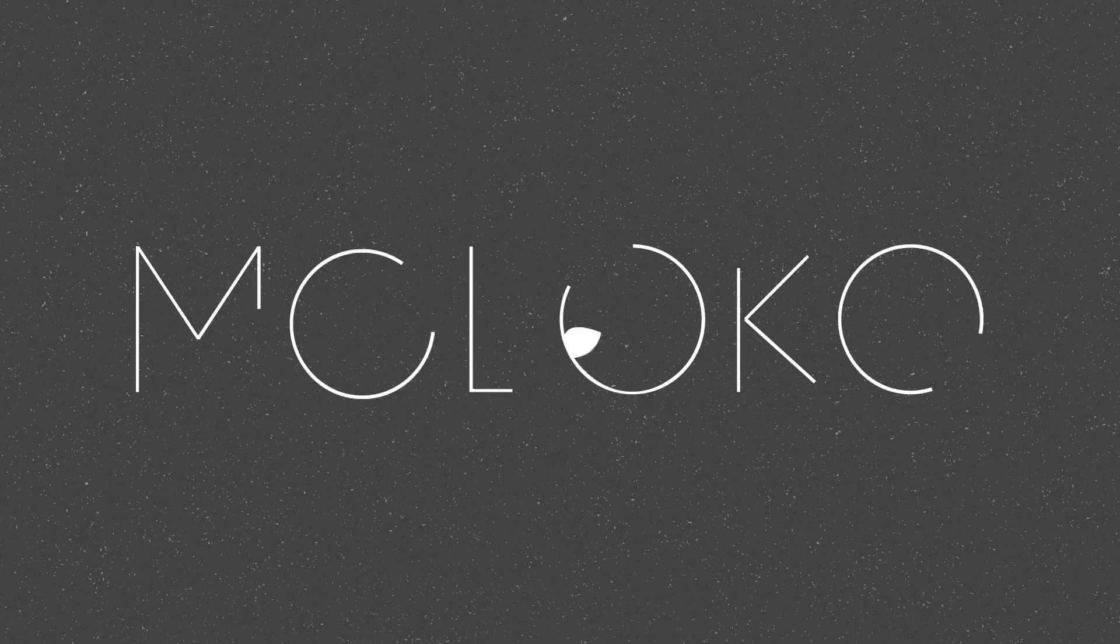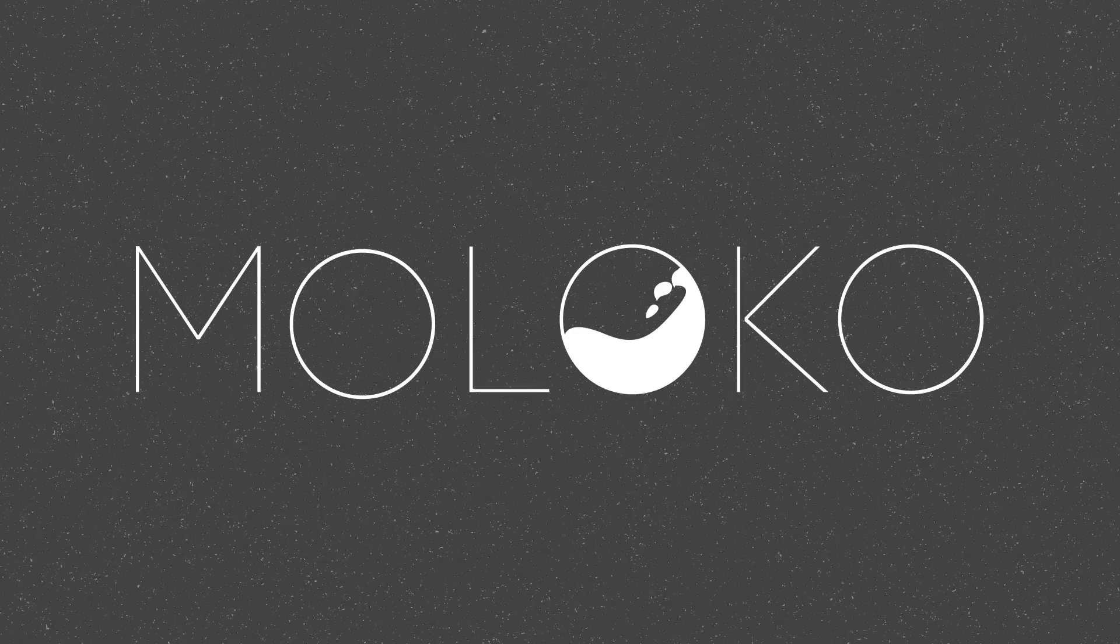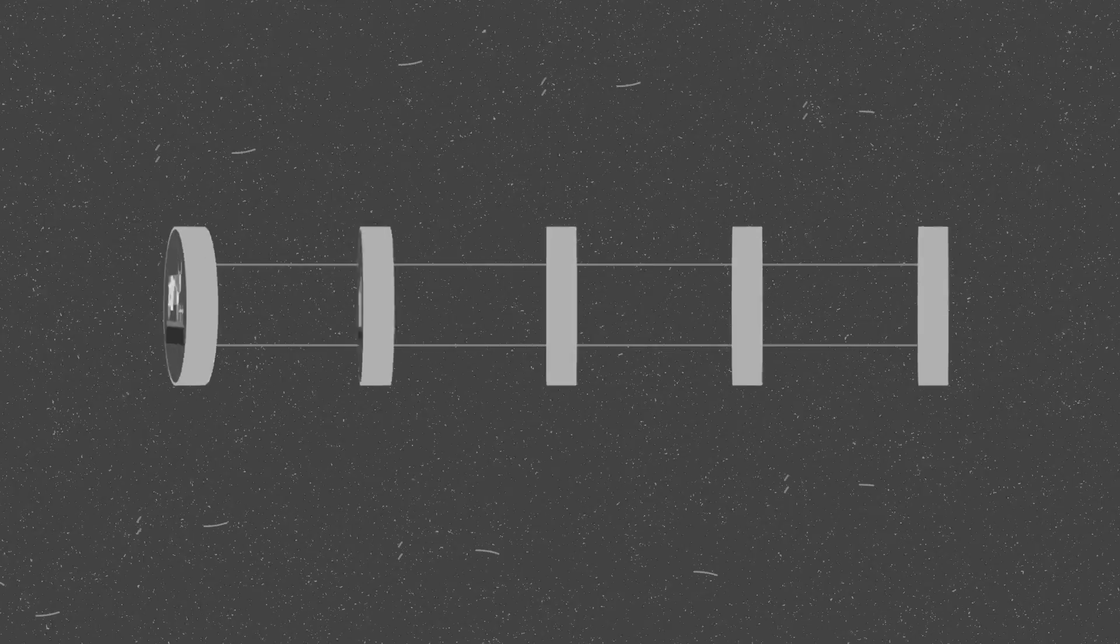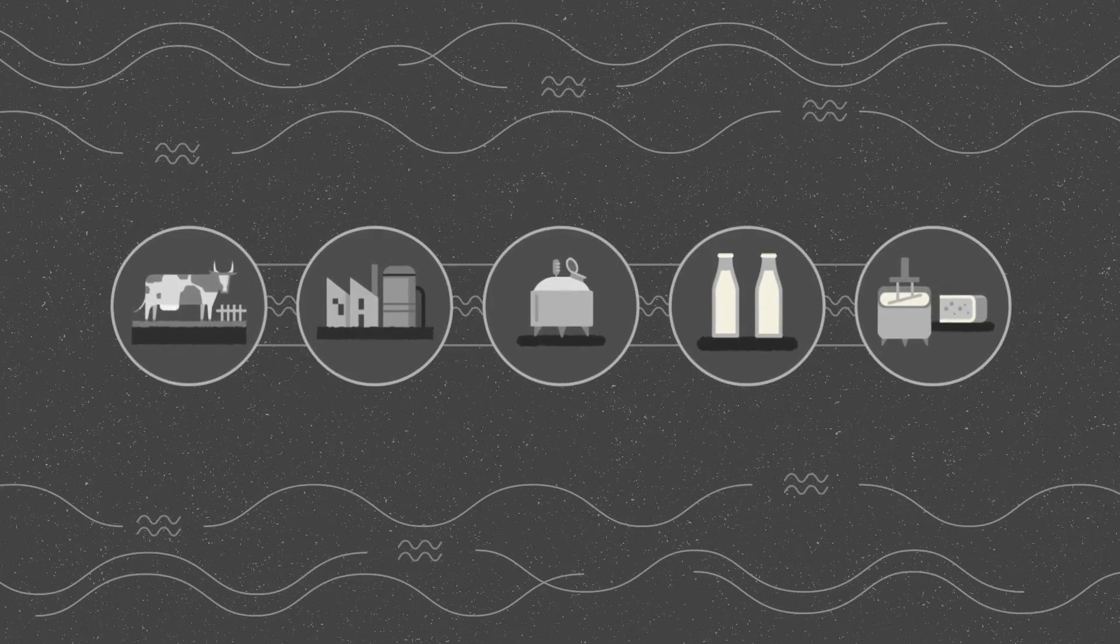Maloco is a European project comprising 12 partners from across Europe founded to optimize production throughout the milk supply chain.